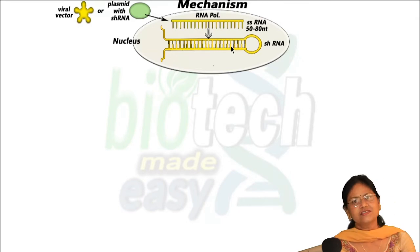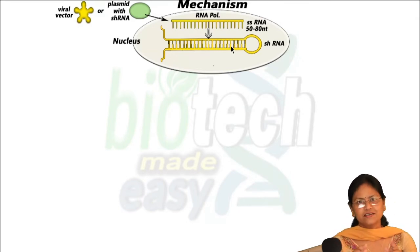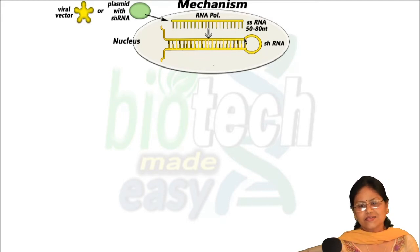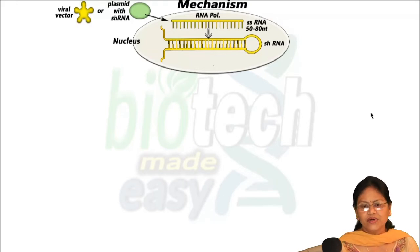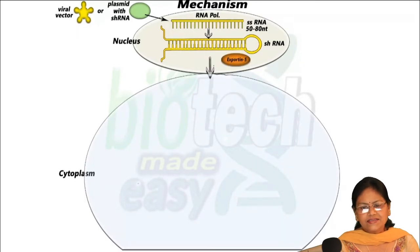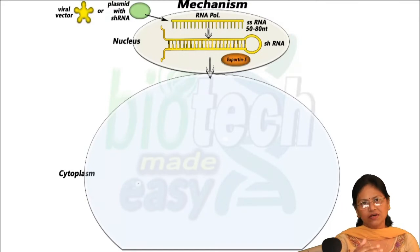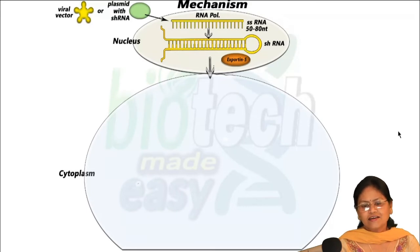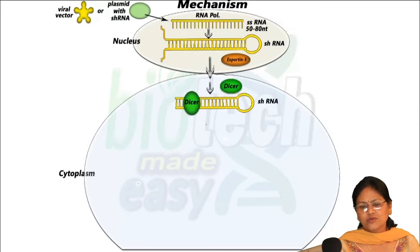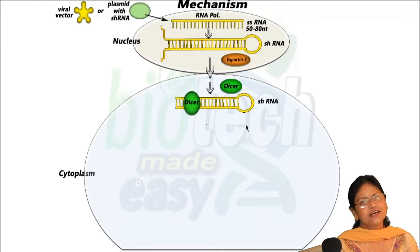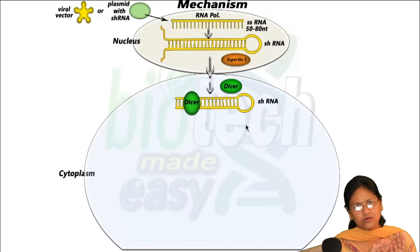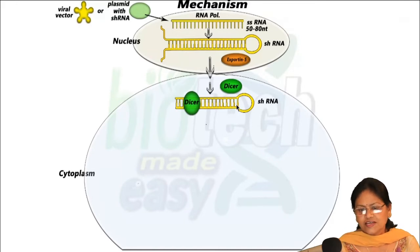Self-hybridization takes place — the single-stranded RNA folds back on itself, pairing takes place, and a loop is also formed which has no pairing. Then with the help of exportin, a protein needed for transportation, this shRNA is moved into the cytoplasm. From this point onwards, the whole process takes place in the cytoplasm.